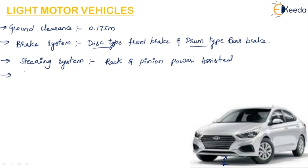The kerb weight — which is the mass of the car along with all operating consumables such as motor oil, lubricating oils, and transmission oils, together with all standard equipment of the vehicle — is one ton for this Hyundai Accent.